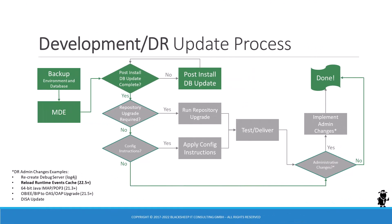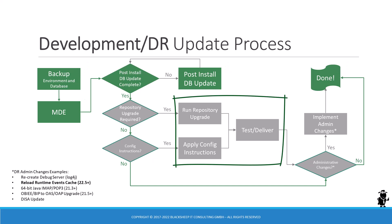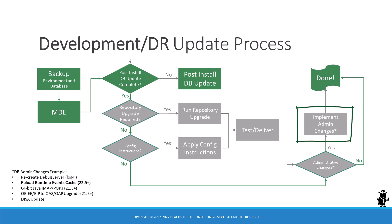The complete update process, with all required and optional steps in green and gray respectively, is depicted on the diagram. The update process for development environments shows that the fast-track to a successful update is as follows: take a backup, run the MDE, run the post-install database update. If you have no repository upgrades, configuration instructions, or administrative changes to implement, you're done. If you need to execute the non-mandatory repository upgrade or apply configuration instructions, you have to do that in the development environment and test and deliver these changes. If you have any administrative changes on your to-do list, you have to implement them as well before declaring success.